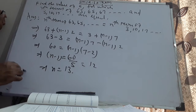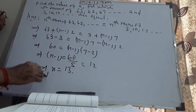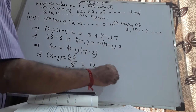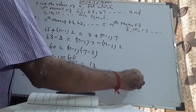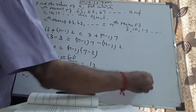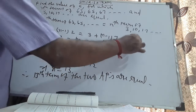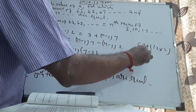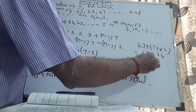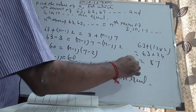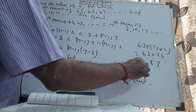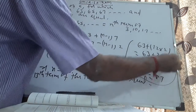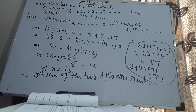Therefore n is equal to 13. So the thirteenth term of the 2 APs are equal. You can verify this: 63 plus 12 into 2 is 63 plus 24, which is 87. And 3 plus 12 into 7 is also 87. Therefore they are equal — the answer is confirmed.